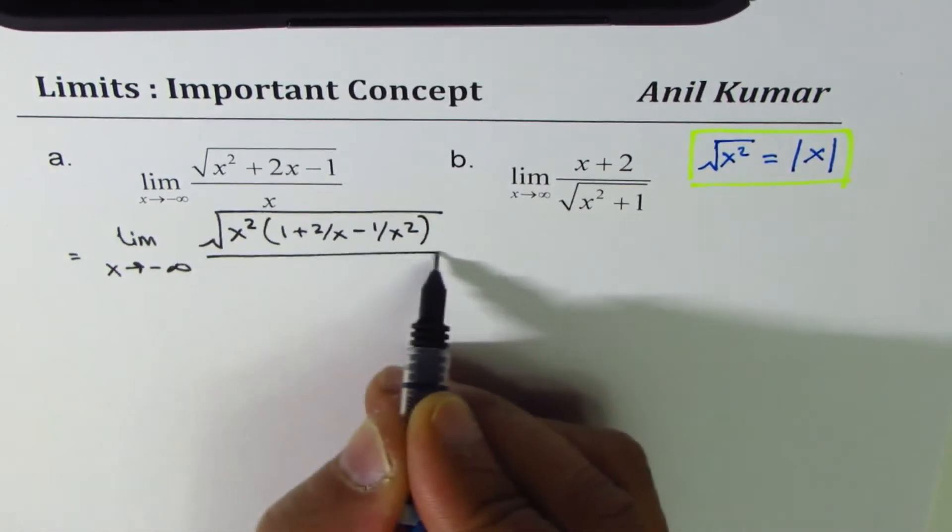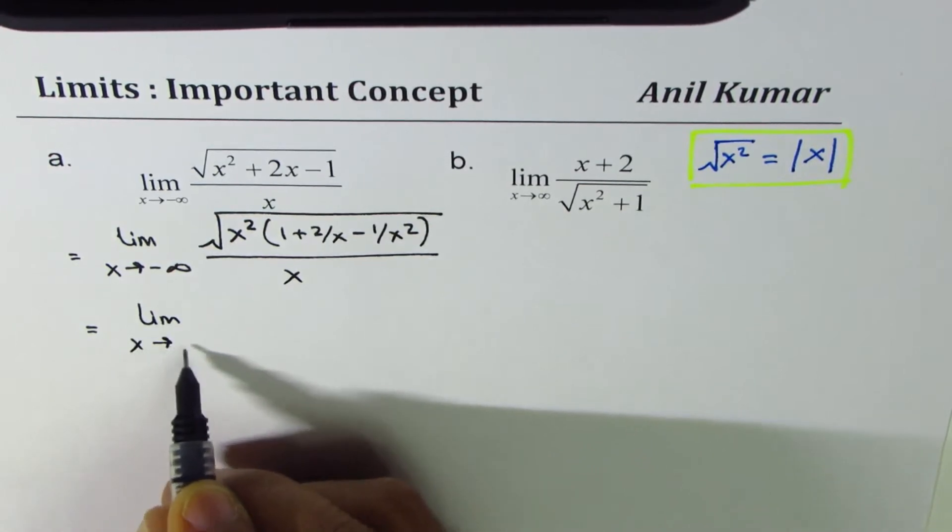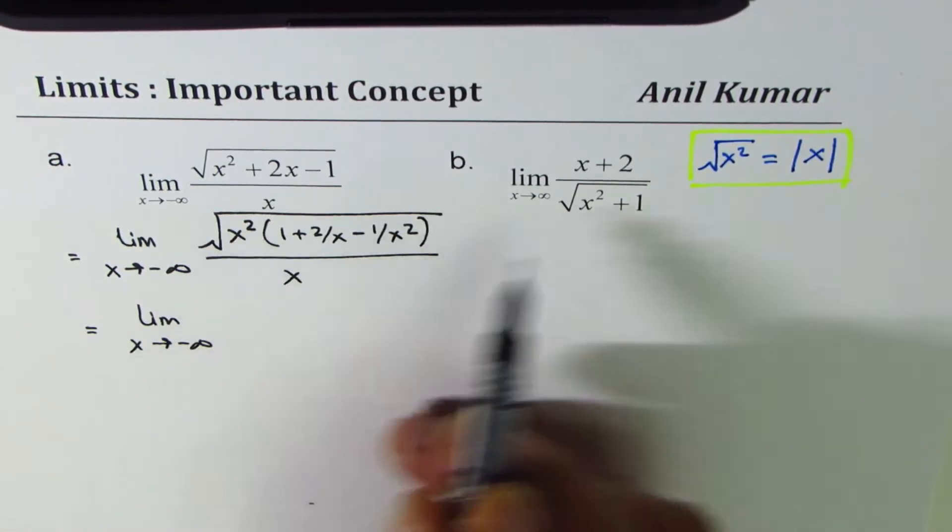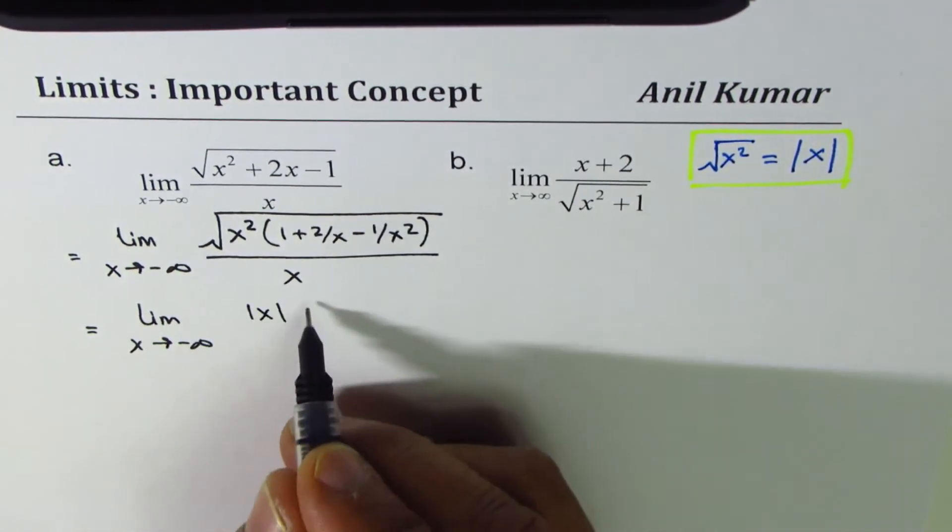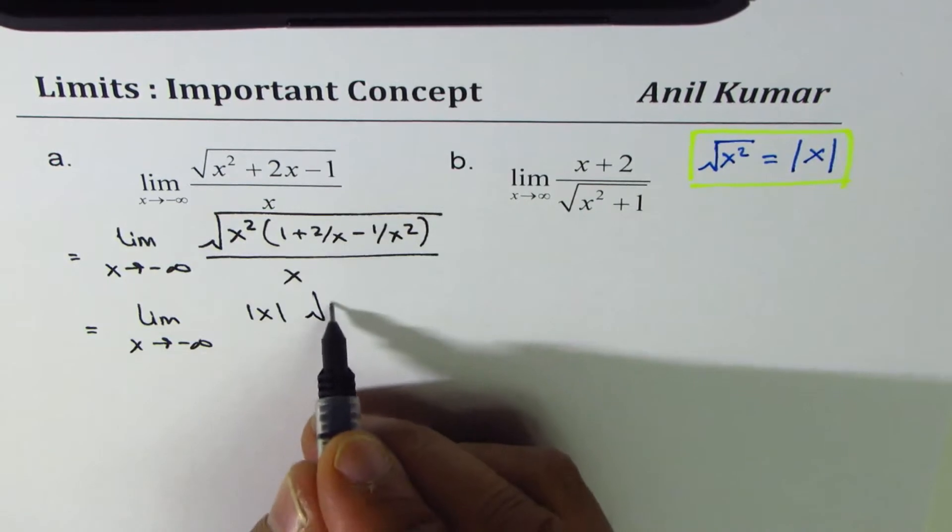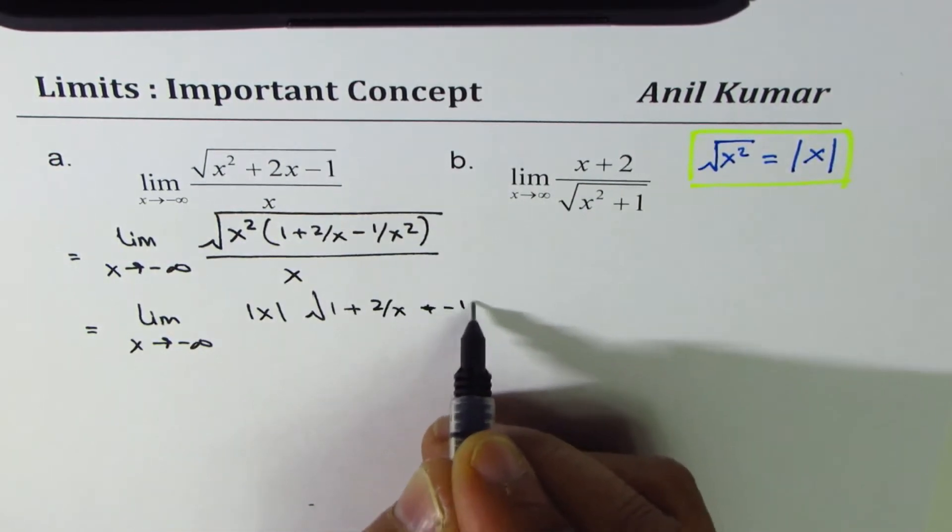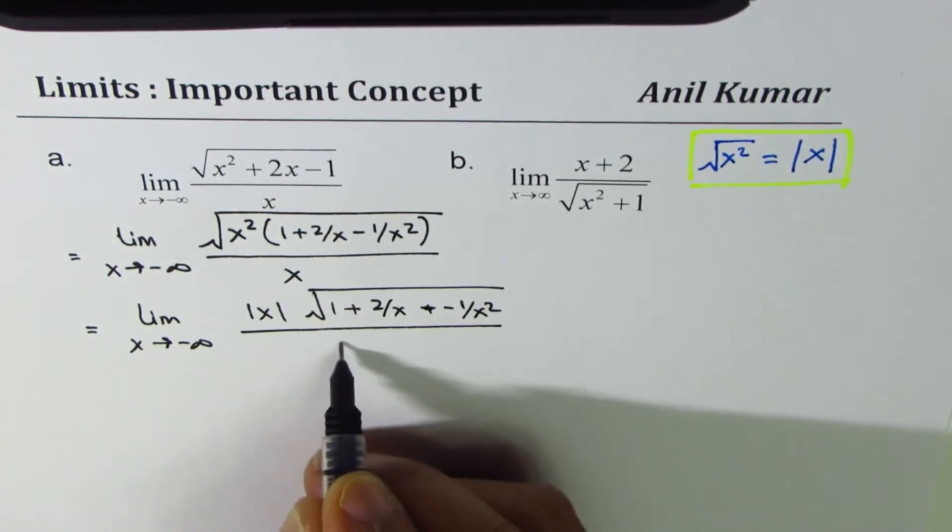divided by x. Now we have x approaches minus infinity. What is square root of x square? Absolute value of x. So let me write absolute value of x. And within square root we have left with 1 plus 2 over x minus 1 over x square. Divided by x.